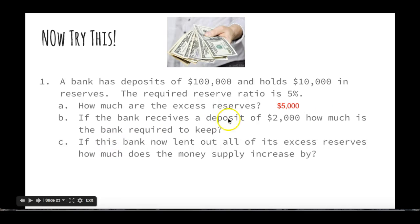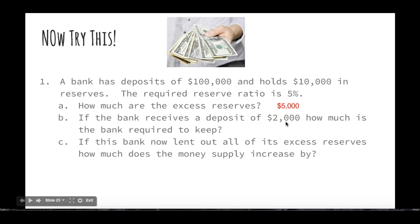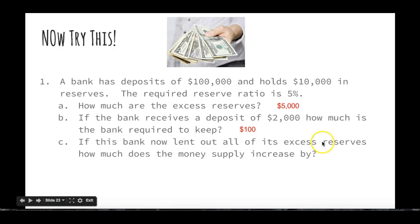Now if this bank receives a deposit of $2,000, how much is the bank required to keep? The required reserve ratio is 5%, so 5% of $2,000 is going to be $100. And if this bank lent out all of its excess reserves, how much does the money supply increase by?